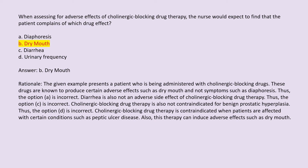Cholinergic blocking drug therapy is also not contraindicated for benign prostatic hyperplasia based on that option. Cholinergic blocking drug therapy is contraindicated when patients are affected with certain conditions such as peptic ulcer disease. This therapy can also induce adverse effects such as dry mouth.